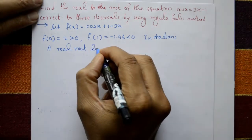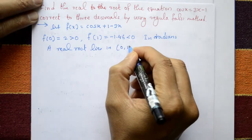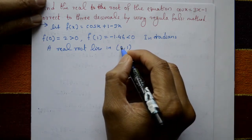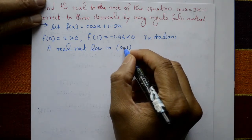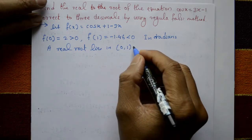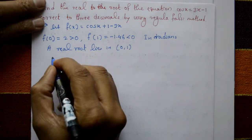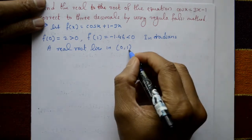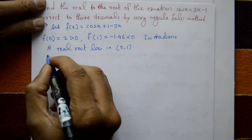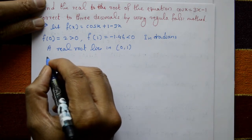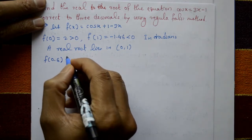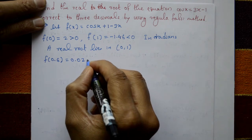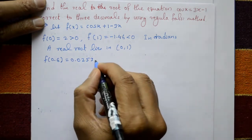A real root lies between 0 and 1. We require one value less than 0 and one greater than 0. Taking a difference of 0.1: evaluating f(0.6) = 0.0253, which is greater than 0.